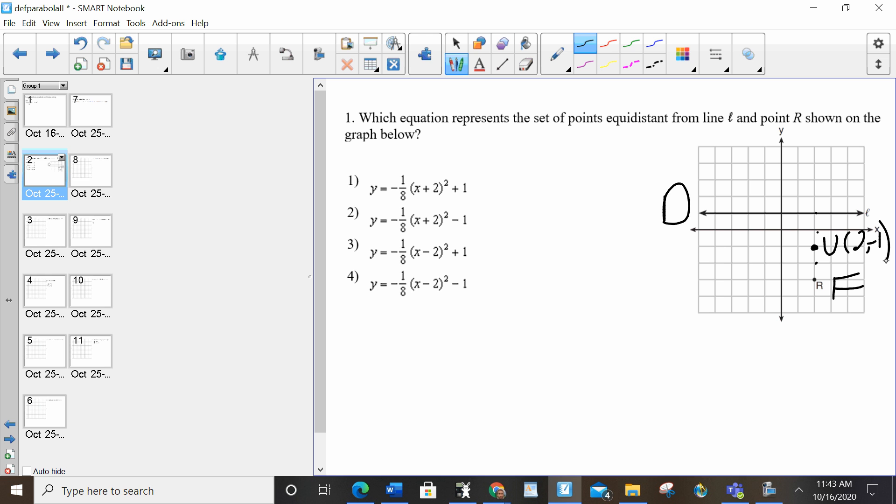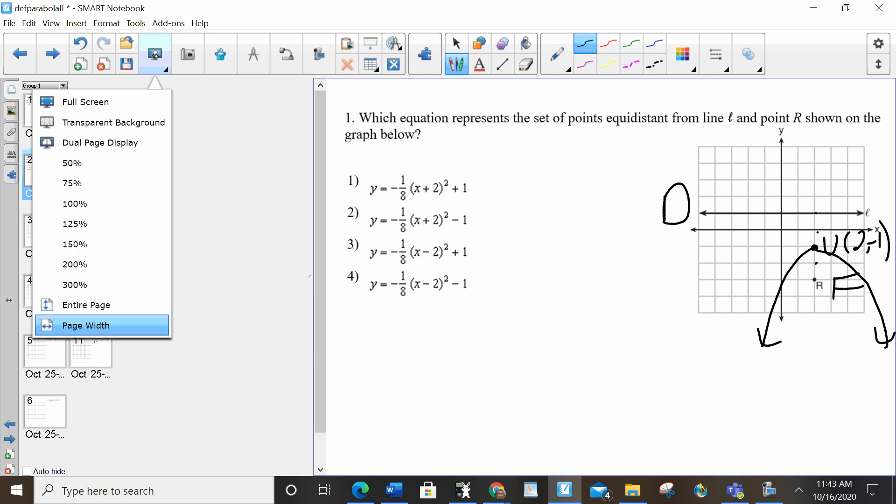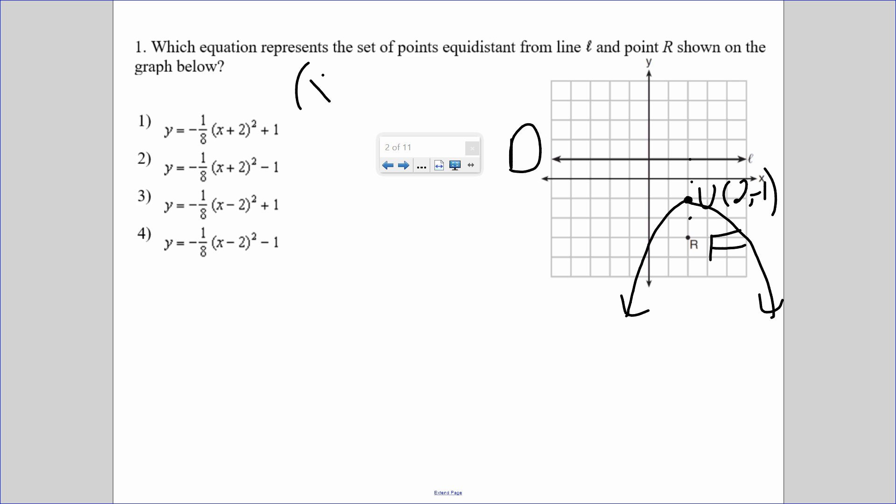So now also since it's opening down, it cannot touch the directrix, it's going to have a negative p value. So now to write my equation, x minus b squared over 4p equals y minus t. b is 2, t is negative 1, p is the distance from the vertex to the focus, it's going down, so it's negative 2.